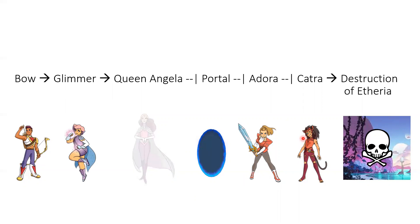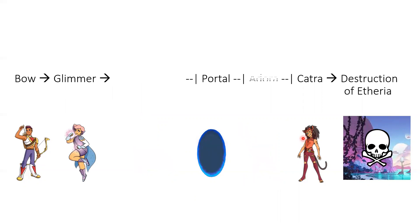Or what if Queen Angela were gone along with Adora? Again, Angela isn't there to stop the portal, but since Adora isn't there either, Catra is still able to cause the destruction of Etheria.